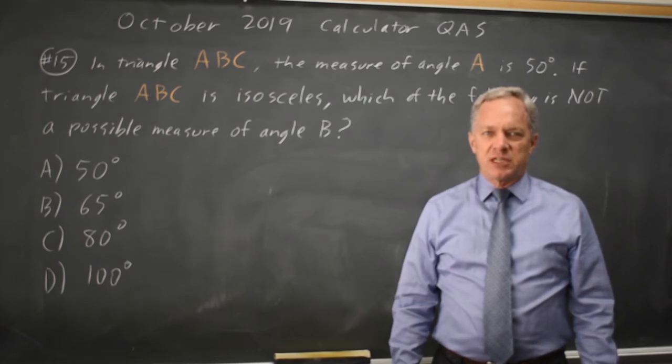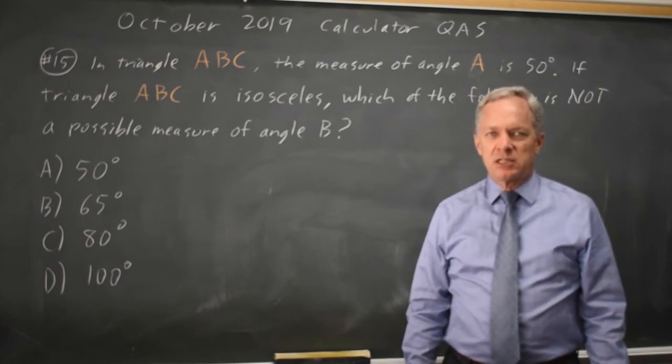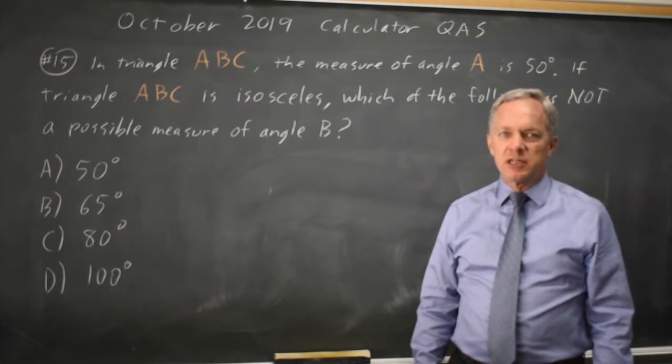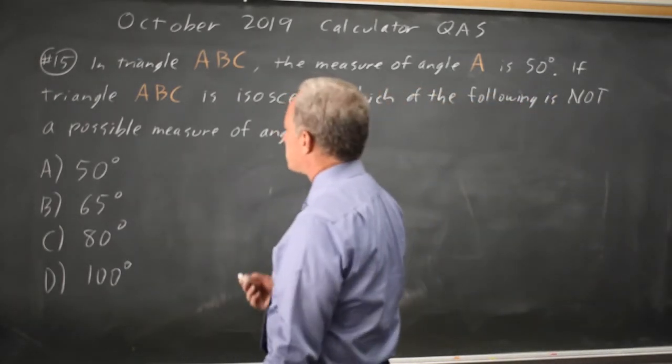This is calculator question number 15. College Board is asking a geometry question about an isosceles triangle. Isosceles means two sides are equal, or equivalently, two angles are equal because if the sides are equal, their opposite angles are equal.